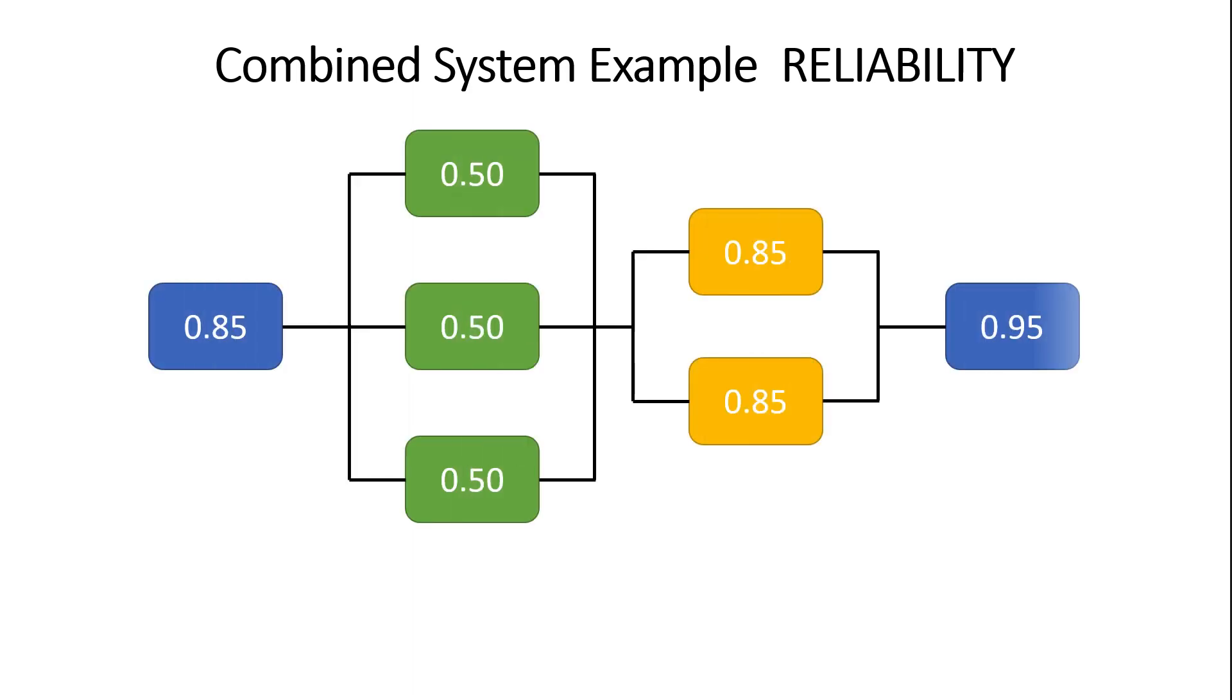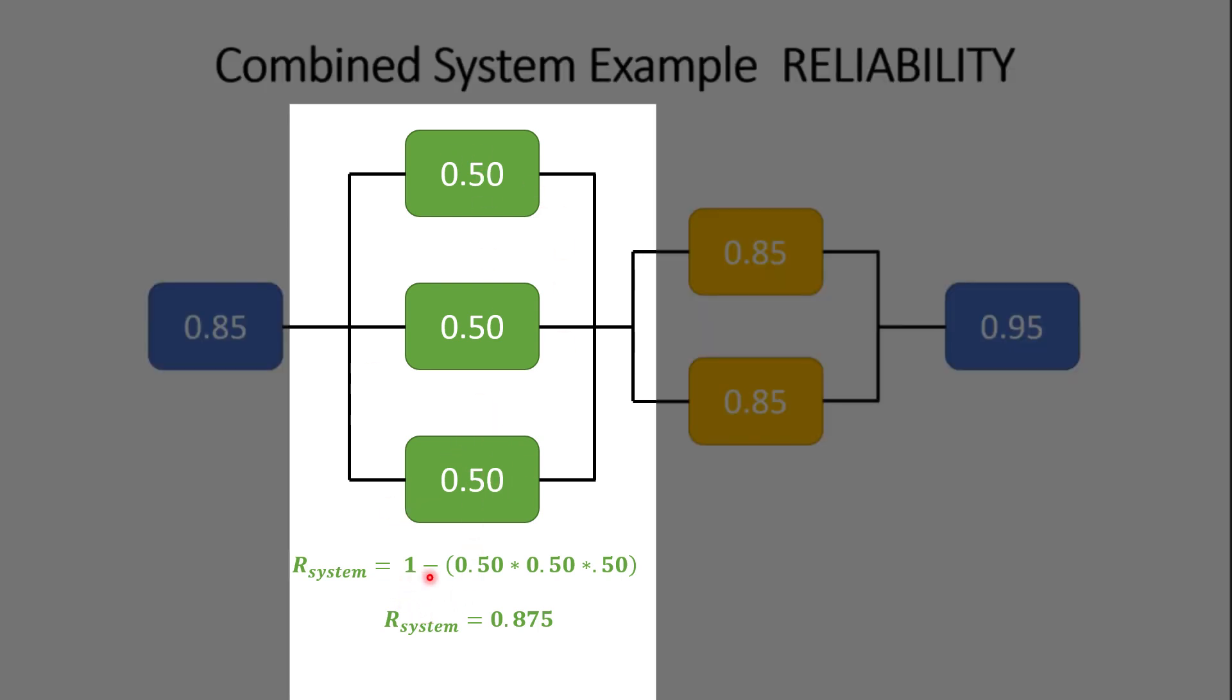Now let's do a combined system example, where we talk about a series system that includes parallel systems within it. So let's say we have some sort of product, and our product flows like this. So we have subsystem A, and then we have subsystem B here. And this is actually a combination of three systems in parallel. We have subsystem C here, which is a combination of two systems in parallel. And then finally, we have subsystem D. Now, the way you'd go about solving the overall system reliability is by calculating the reliability of subsystem B first. So again, this is simply just one minus the unreliability of each component, 50%, 50%, 50%. And that comes out to an overall system reliability of 0.875.